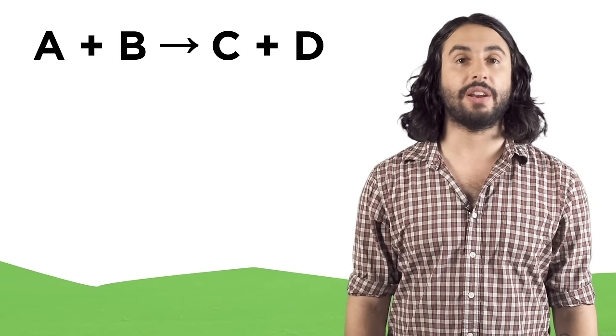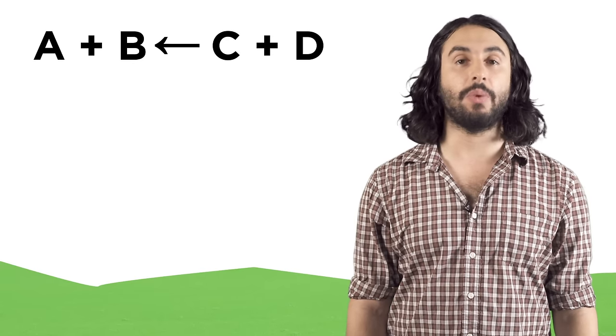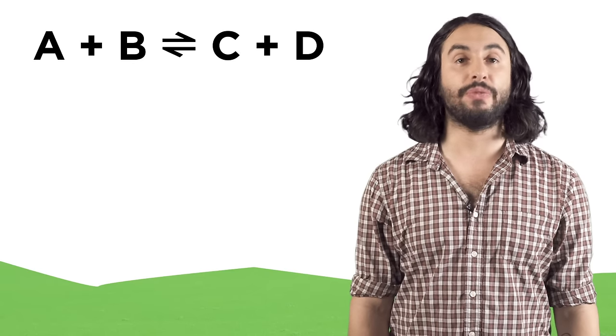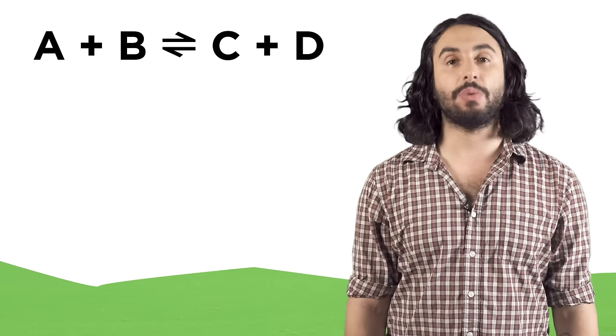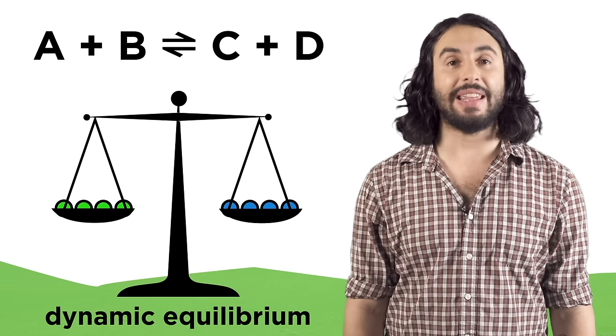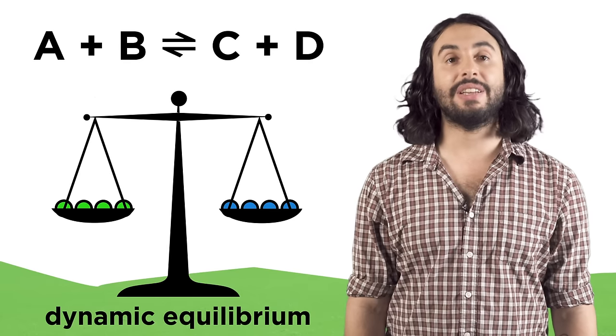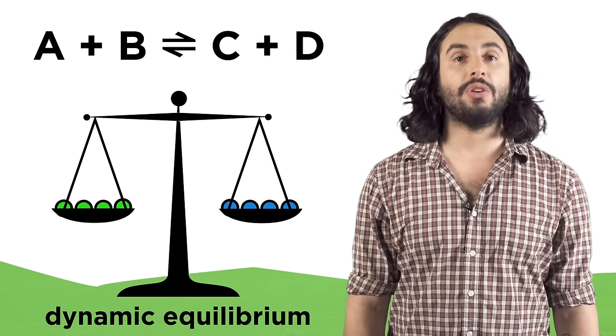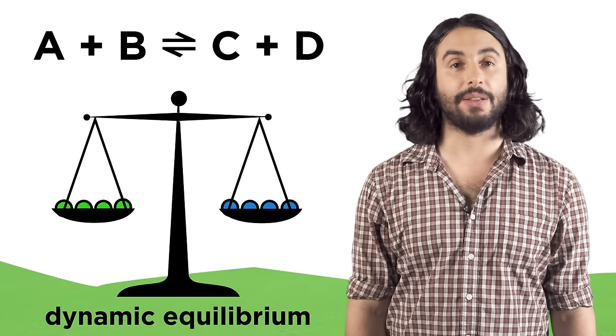The reactants create the products, which then go right back and create reactants. This means there is both a forward and a reverse reaction. When the rates of the forward and reverse reactions are the same, this system is at dynamic equilibrium. Chemistry is happening, but because the reactions are happening at the same rate, there doesn't appear to be any activity. There is a balance.